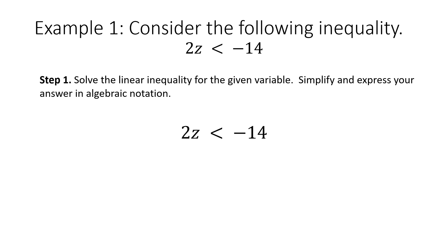I'm going to solve this inequality the same way that I would solve an equation. 2 and z are being multiplied together, so to undo multiplication, I'm going to divide both sides by 2. Bringing down my variable z and my inequality, negative 14 divided by 2 gives me negative 7. So my answer in algebraic notation is z is less than negative 7.